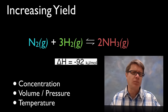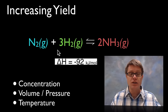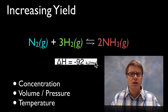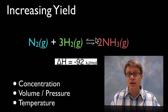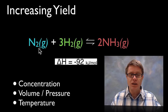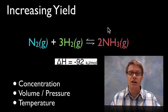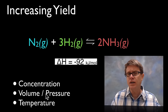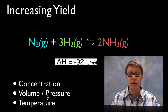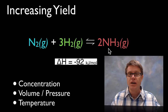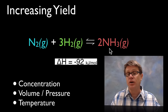Le Chatelier's principle can be applied to increase yield. Looking at the Haber process — nitrogen gas and hydrogen gas making ammonia, an exothermic reaction with heat on the right side. To increase the amount of ammonia via concentration: increase the reactants, pushing the reaction to the right. For pressure: on the left side we have 4 moles, on the right only 2 moles. Squeezing this reaction converts it toward the lower-mole side — toward ammonia — giving a greater percent yield.